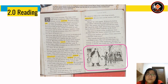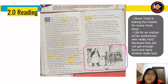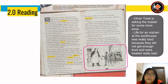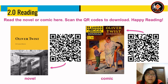This is an extract from the novel Oliver Twist. Looking at the picture, Oliver Twist is asking the master for some more soup. What was life like for an orphan at a workhouse? Life for an orphan at a workhouse was really hard because they did not get enough food and were treated very badly. You can read the novel Oliver Twist or the comic version by scanning the QR codes to download. Happy reading.